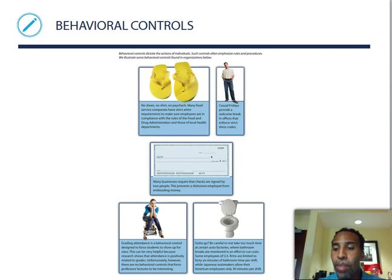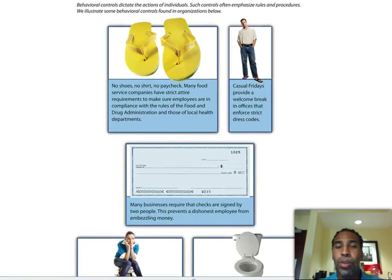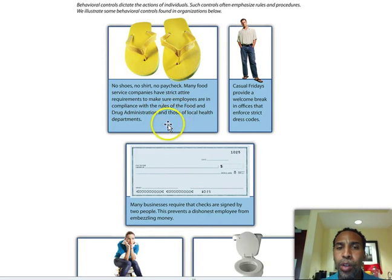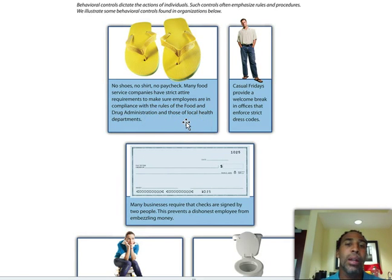Behavioral controls: you need a mix of both financial and non-financial controls within a company. 'No shoes, no shirt, no paycheck' — many food service companies have strict attire requirements to ensure employees are in compliance with the Food and Drug Administration and local health department rules.